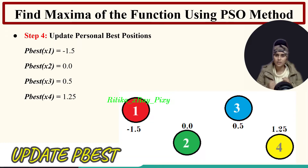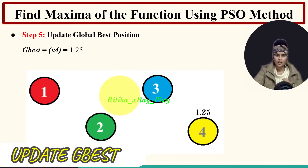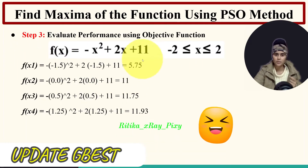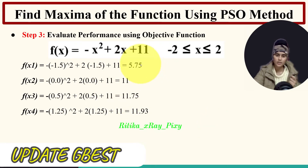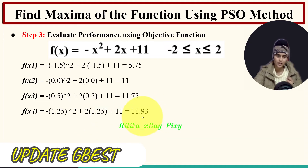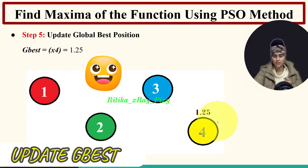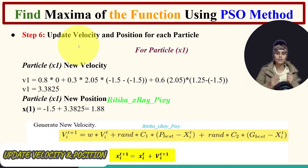Now for each particle we update their personal best position - right now it is the same as the initial position for each particle. Then we update the global best, which is the best among all. Since we are doing direct maximization, we consider the maximum fitness value as the best. The maximum value among all particles is 11.93, belonging to the fourth particle. So we consider particle 4's position (1.25) as the global best.